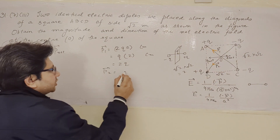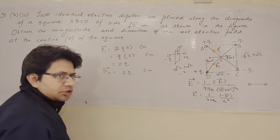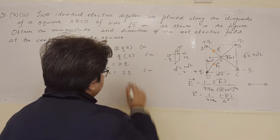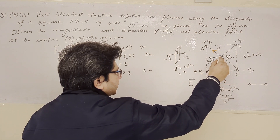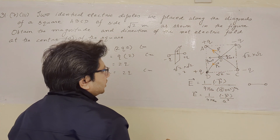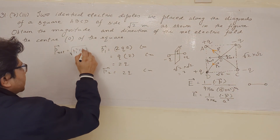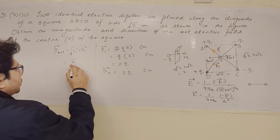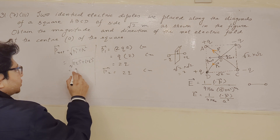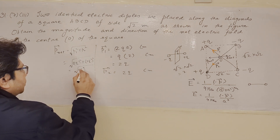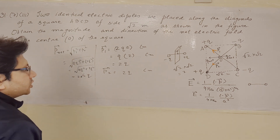Similarly, for the second dipole, the dipole moment P2 is also 2q coulomb-meter, since the distance and charge combination are the same. To calculate P net, we observe that P1 and P2 make an angle of 90 degrees with each other. So the resultant is P net equals square root of P1 squared plus P2 squared, which gives square root of (2q)² plus (2q)², equal to square root of 4q² plus 4q², which is 2 root 2q.